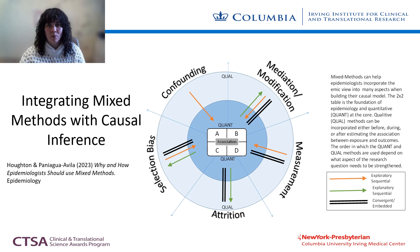In the middle is the 2x2 table that is central to epidemiology and related public health fields. It is surrounded by a dark blue circle representing quantitative methods. The outer light blue circle is qualitative methods. The orange arrows represent exploratory sequential studies that first use qualitative methods followed by quantitative ones. The green arrows represent explanatory sequential designs that use quantitative methods first and then qualitative methods. The double black line represents convergent and/or embedded designs. The choice of mixed method study design depends on the research questions as well as what aspect of causal inference the researcher wants to improve.